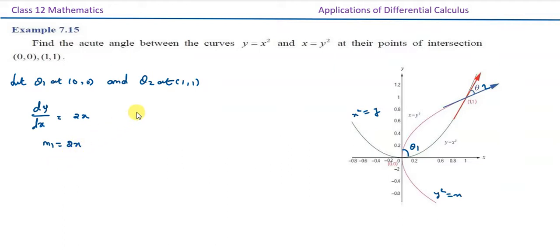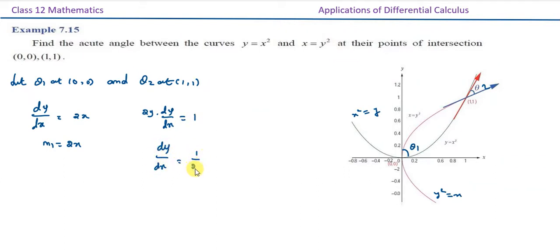Next, for x equal to y squared, differentiating gives 1 equals 2y times dy/dx. Therefore, dy divided by dx is equal to 1 divided by 2y, where m2 is equal to 1 by 2y.